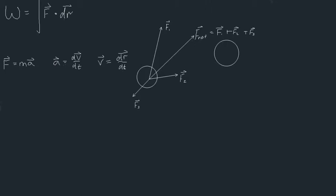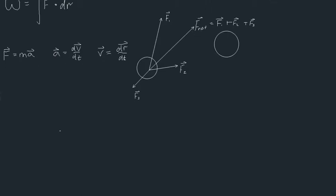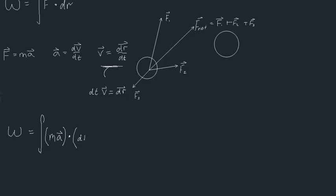Let me scroll down just a little bit. So work is equal to the integral of force dot dr. Well, we know force is now equal to ma — where m is just a scalar — and that's going to be dotted with dr. Using our velocity formula, we multiply dt by both sides and get dt times our velocity vector equals dr. And we can do that because dt is just a scalar, just a number. So we can dot ma with dr, which we just figured out was just dt times v.